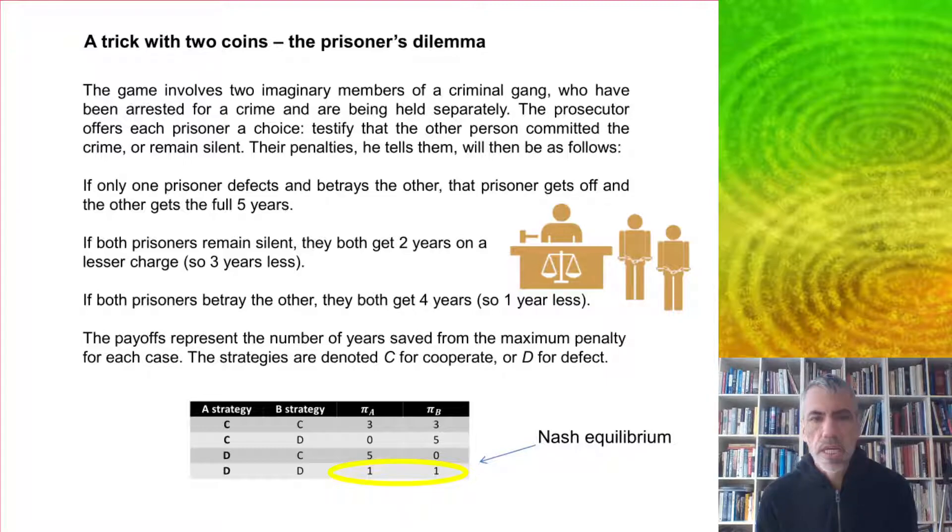The payoffs represent the number of years saved from the maximum penalty for each case, and the strategies are denoted C for cooperate or D for defect. The strategy where they both defect is a Nash equilibrium because if either of them changes their strategy unilaterally, then they will be worse off.